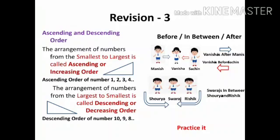The arrangement of numbers from the largest to smallest is called descending or decreasing order. For example, descending order of numbers like 10, 9, 8 means big to small. We also learn the concept of before, in between, and after numbers or objects. Number 148 is just before 149, or we can say number 149 is just after 148, or number 148 is in between 147 and 149. Dear students, practice it.